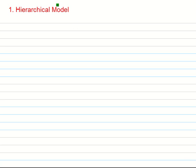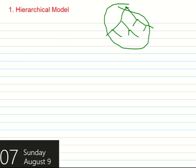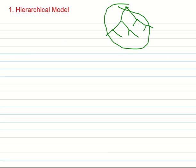The hierarchical model, as you can understand by the name, is a tree-based model. It contains a root with branches coming out of it, and those branches keep branching until all the information is inserted in the system. It is a parent-child model, and this type of model was generally used during the time of mainframe computers.